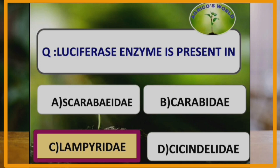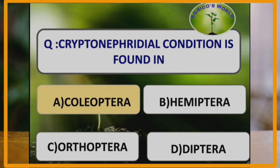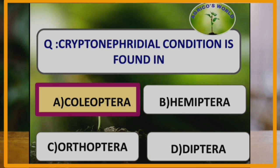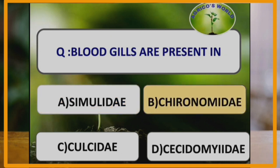Luciferase enzyme is present in Lampyridae. It also contains the chemical luciferin. The chemical luciferin and the enzyme luciferase are responsible for bioluminescence in the members of the family Lampyridae. Cryptonephridial condition is found in the order Coleoptera.